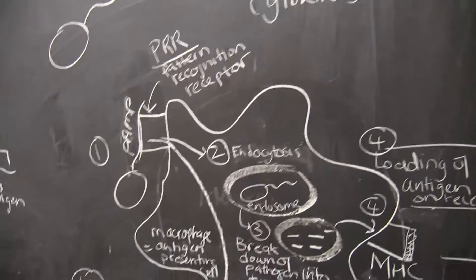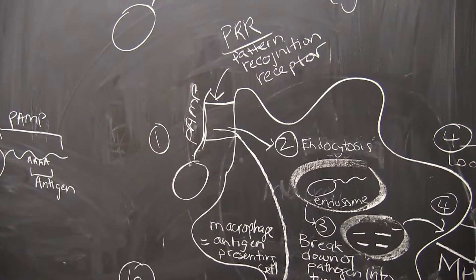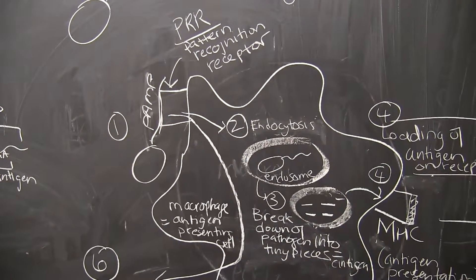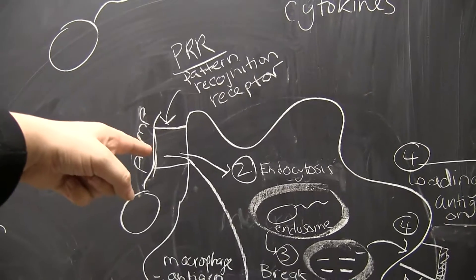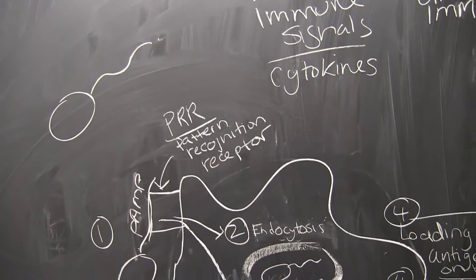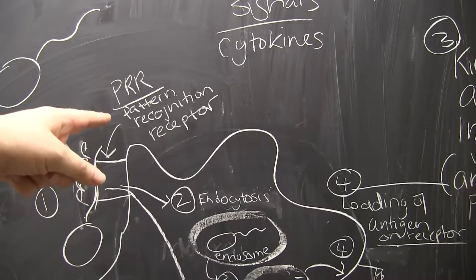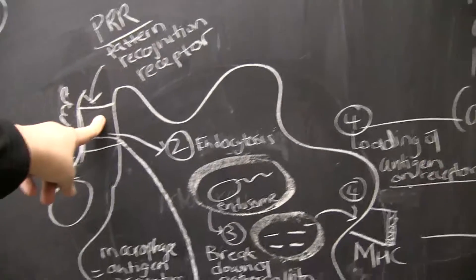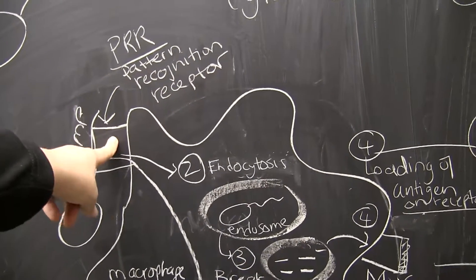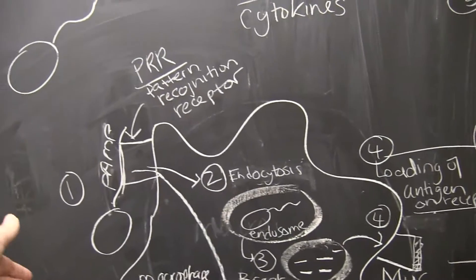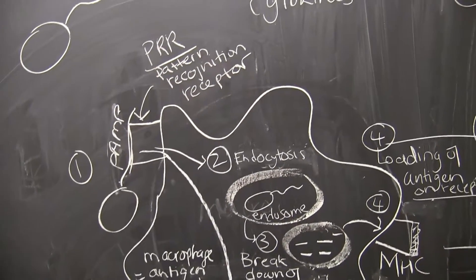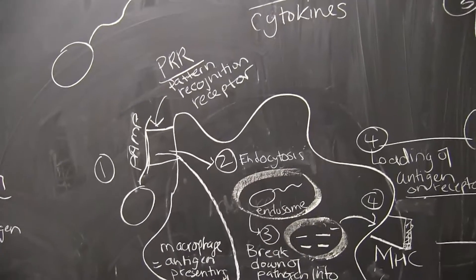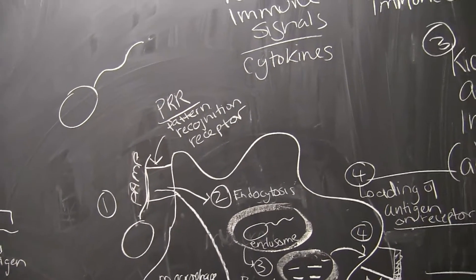So what we have here is step number one: we have our PAMP, and I've drawn a macrophage here. On the surface of the macrophage we can see a particular receptor called PRR, which stands for pattern recognition receptor. This PRR will recognize PAMPs — it can recognize all sorts of different PAMPs, like the flagella I've drawn here. Once this binding happens, a few different things will occur.